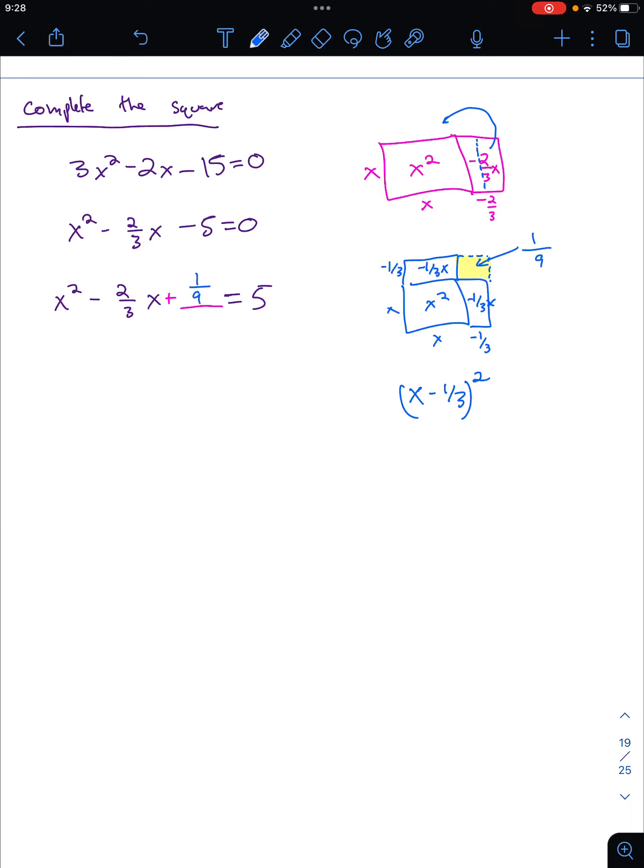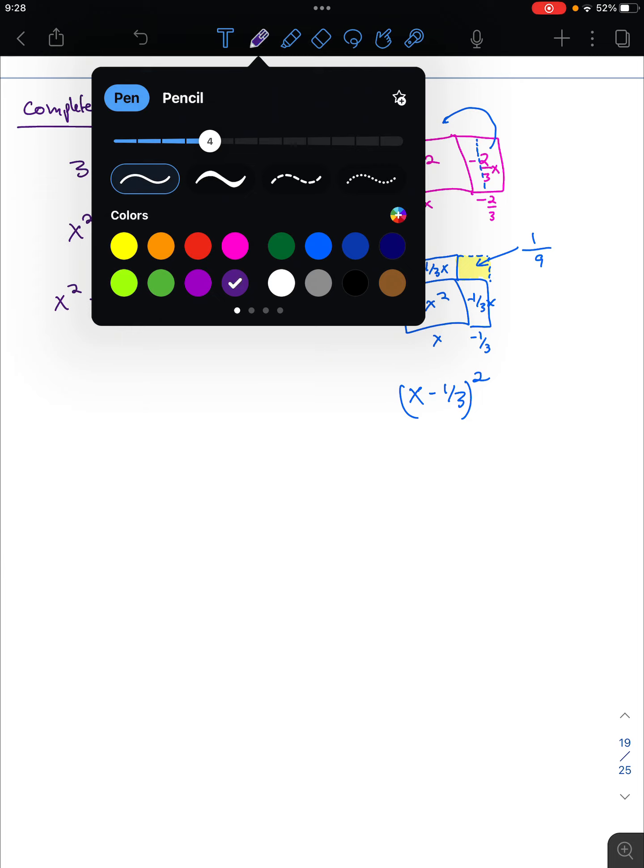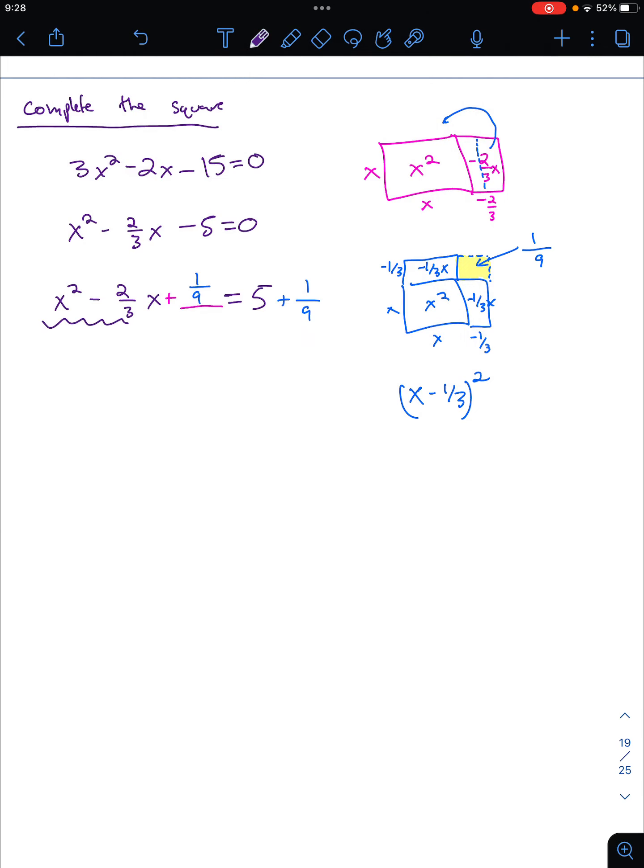So I add in 1 ninth here. And if I do it on one side of the equation, I should do it on the other side of the equation. Whole point of completing the square was to make this a perfect square trinomial, which will factor down into x minus 1 third squared. So I can make it x minus 1 third squared equals 5 plus 1 ninth. 5 is the same thing as 9 times 5, 45 ninths plus 1 ninth. So I'm going to get 46 over 9.